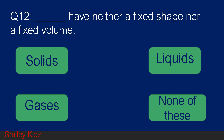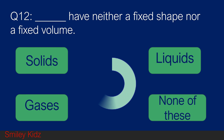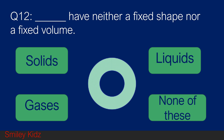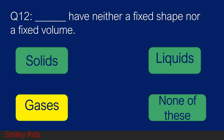Question number 12. Blank have neither fixed shape nor fixed volume. Option A solids, option B liquids, option C gases, and option D none of these. Your time starts now. And your time is up. The right answer is gases. Gases have neither fixed shape nor fixed volume.